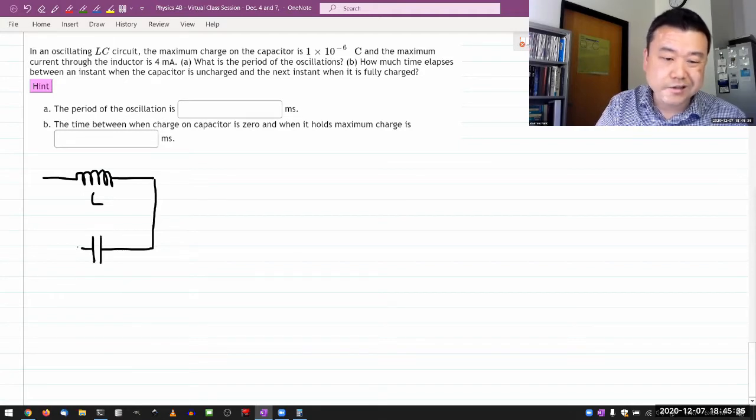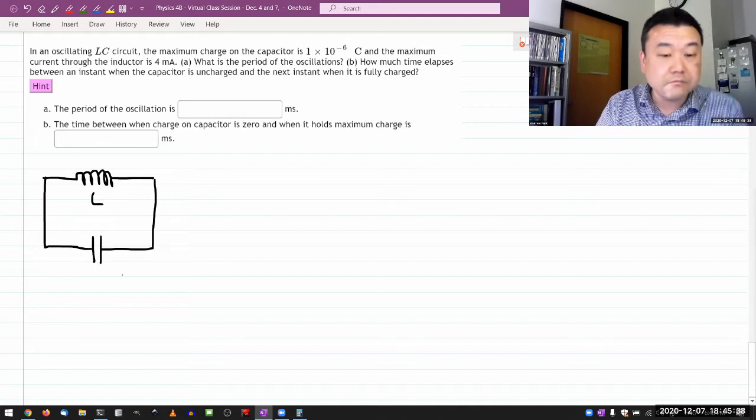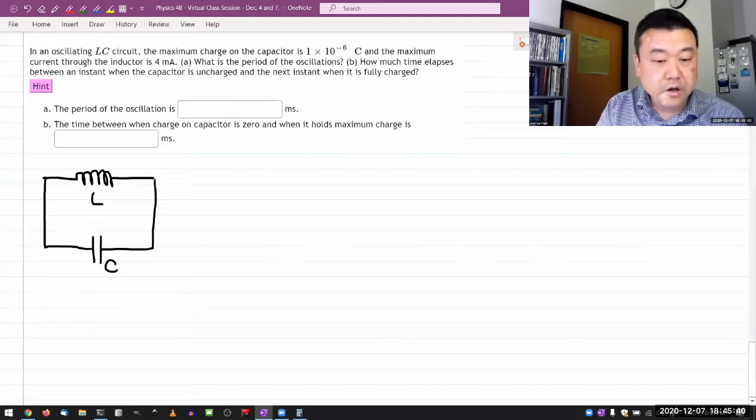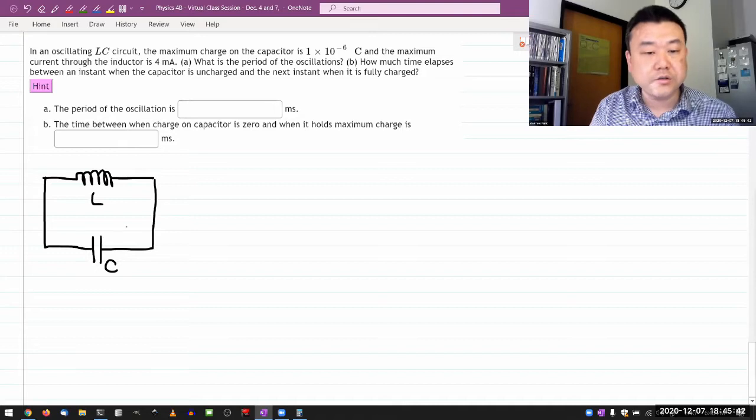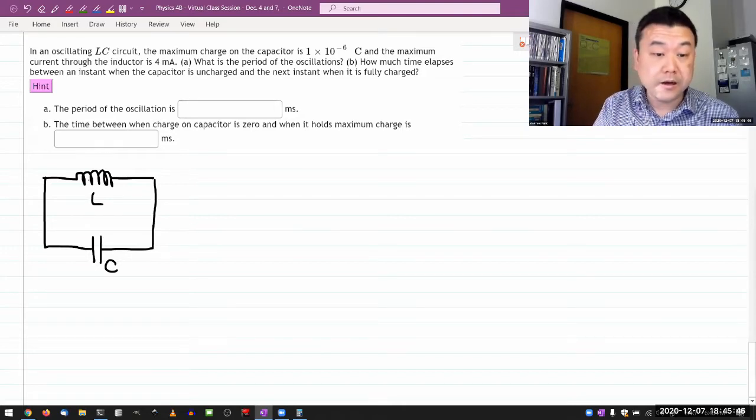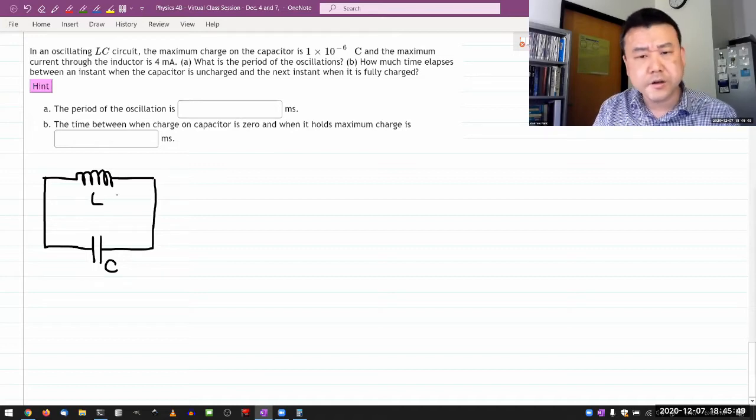Technically, you don't need something to initially charge this up or something. But make things simple. Just assume that something has initially charged this up. And what you have to deal with now is behavior of the circuit after it's been charged up.